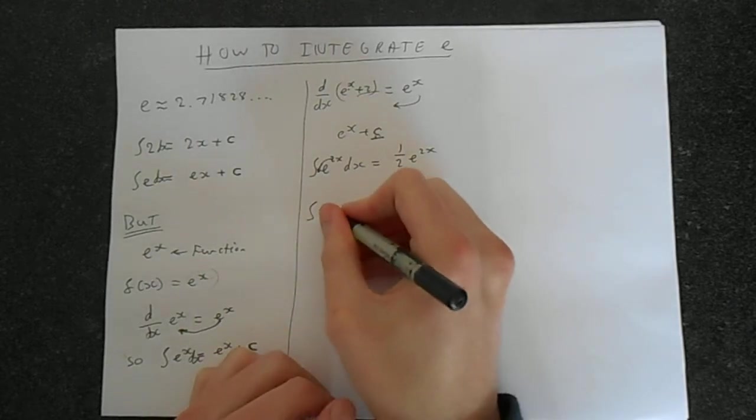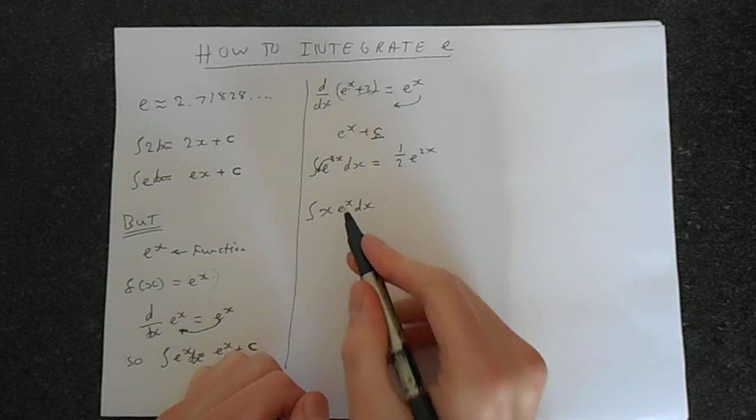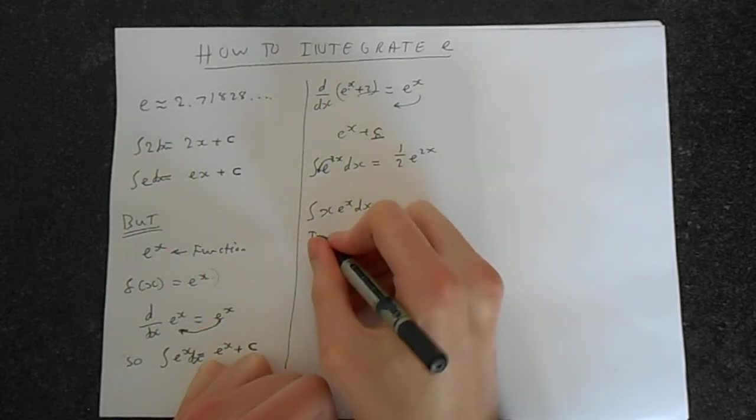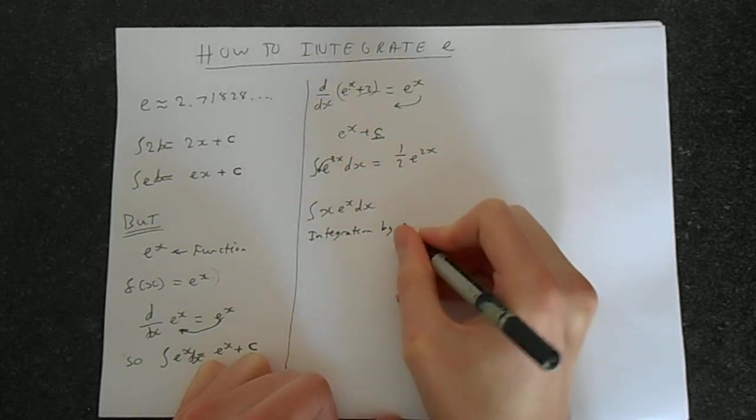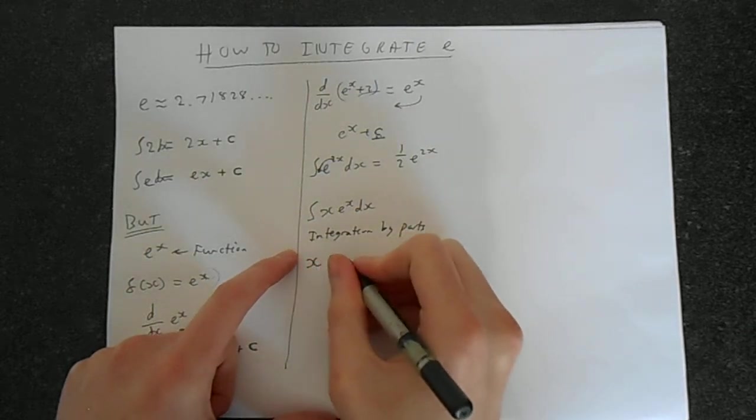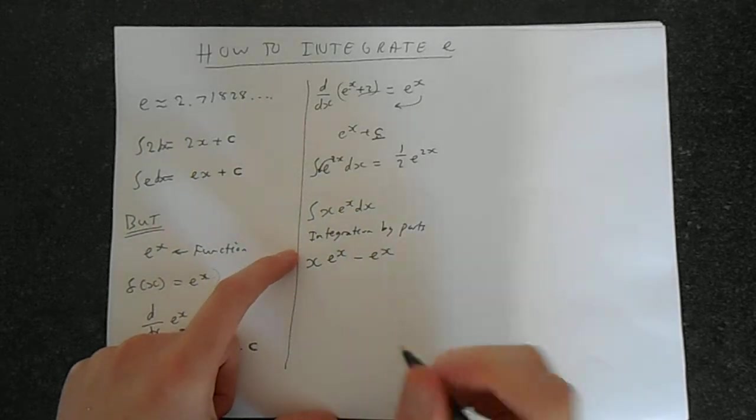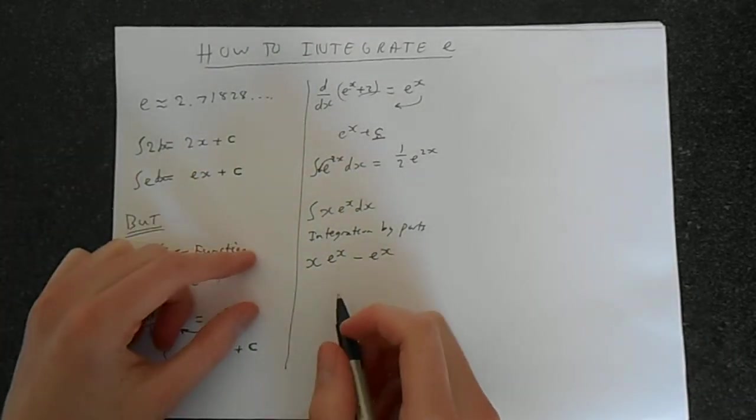What if you had the integral of x·e^x dx? I have a video explaining exactly how to do this. You use what's called integration by parts, and that gives you xe^x - e^x. If you want to know where that comes from, I'll link you to a video that has a proof of why that is true.